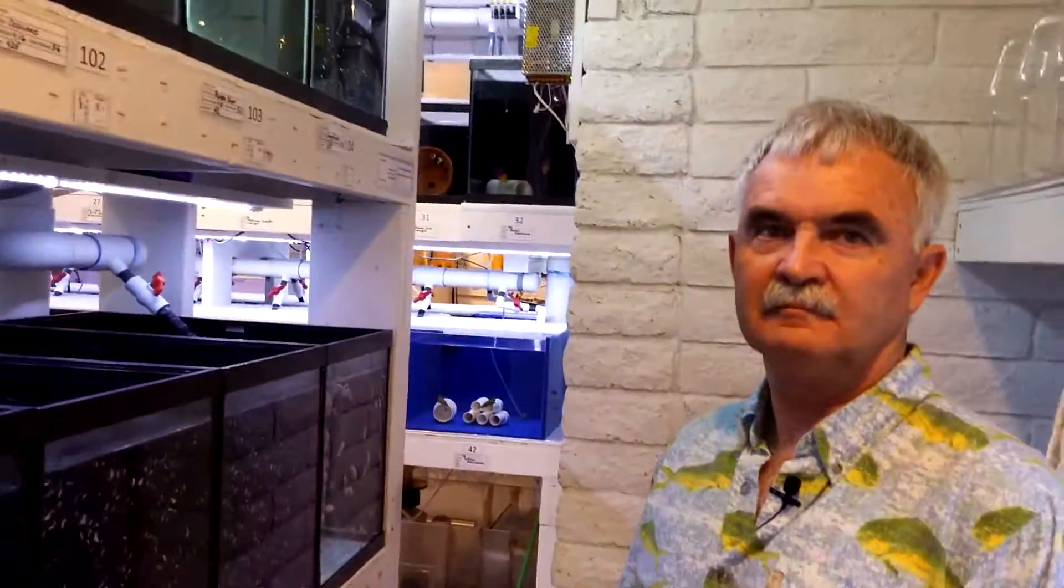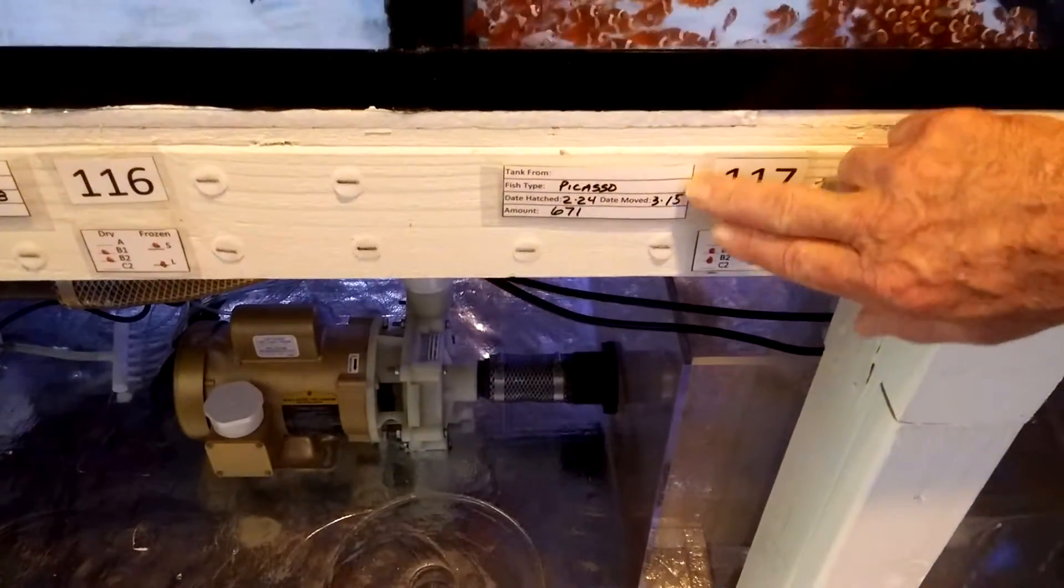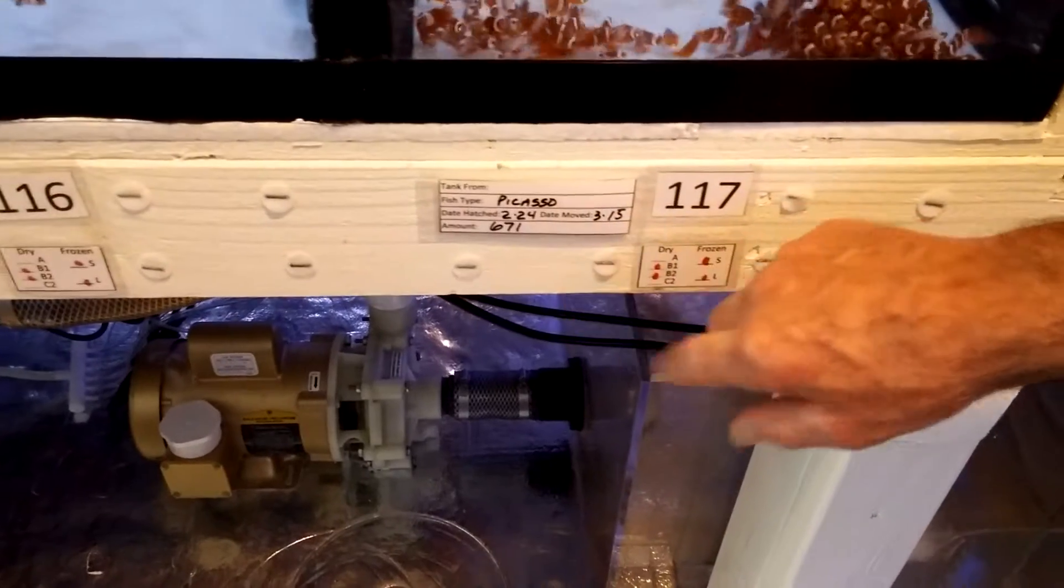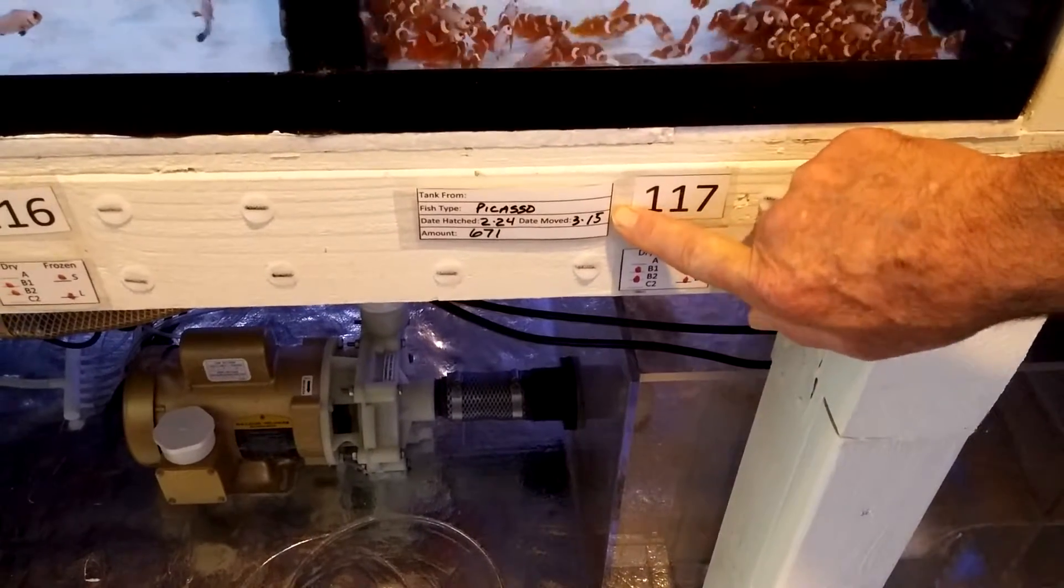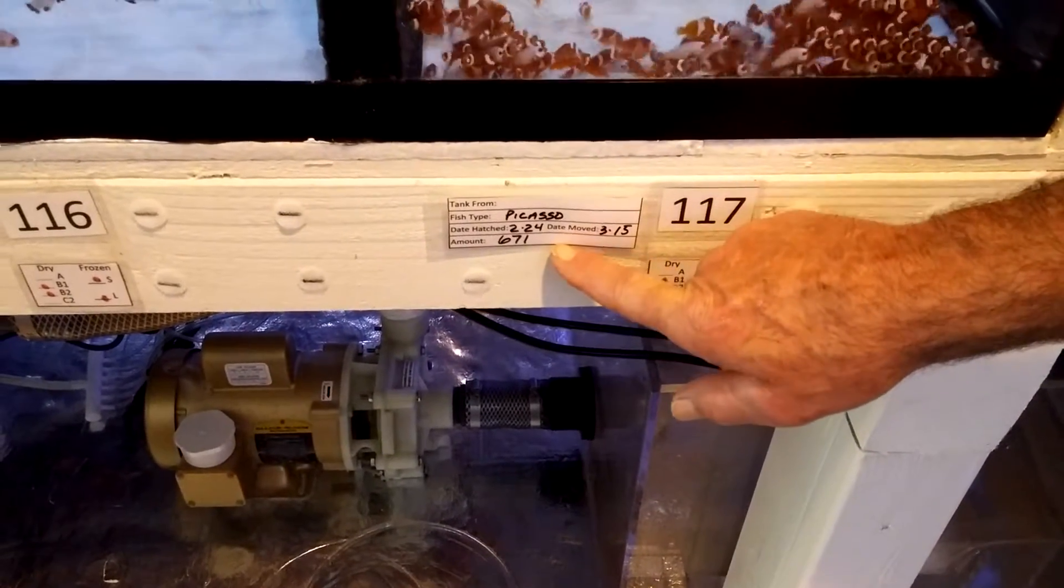Bob, when you have this many fish, how do you keep track? How do you know what is your livestock inventory? We have a tag that will say what the fish was right here, the day when it was hatched, and the day it was moving to the system. And then for inventory reasons, we count.